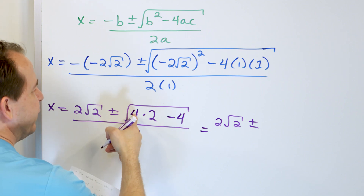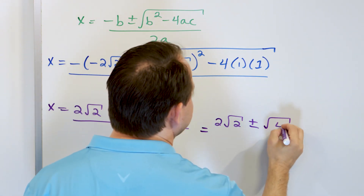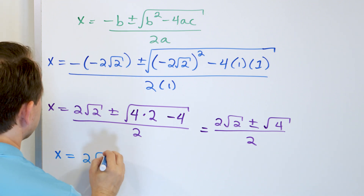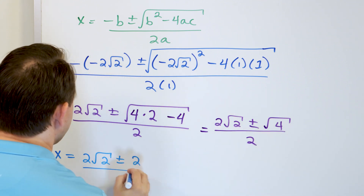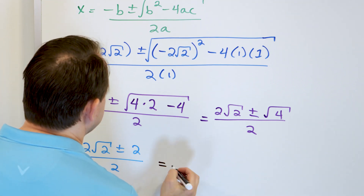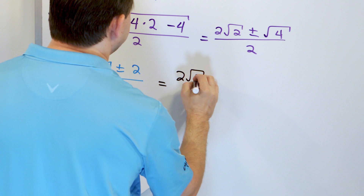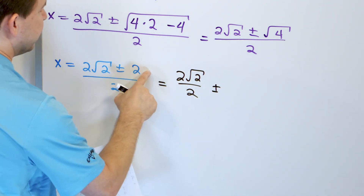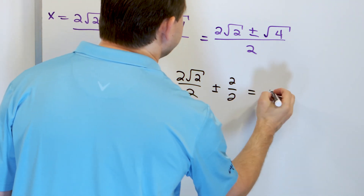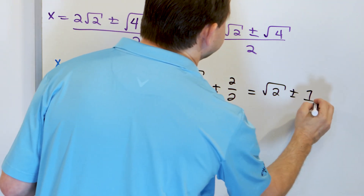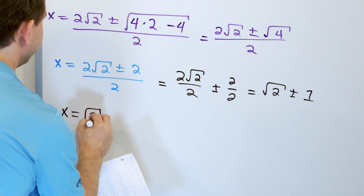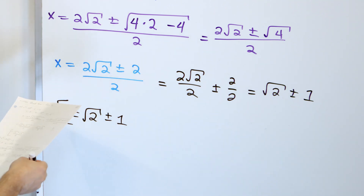So then what do you have? 2 root 2 plus or minus — on the inside, 2 times 4 is 8, 8 minus 4 is 4 — so this is the square root of 4 over 2. And finally, 2 root 2 plus or minus — the square root of 4 is 2 — over 2. So 2 root 2 plus or minus 2 over 2. Let's split it apart and cancel: 2 root 2 over 2, plus or minus 2 over 2. Cancel the 2 on top and bottom, leaving square root of 2, plus or minus 1. So the answer is square root of 2 plus or minus 1 — or equivalently 1 plus or minus root 2. There are two answers, of course, as there always are for a quadratic.